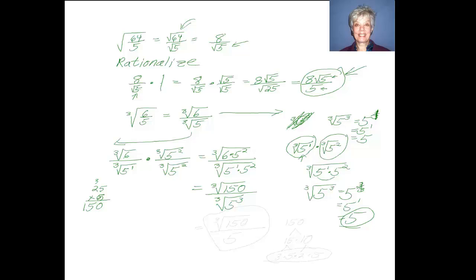Twice we've figured out what that is — the cube root of 5 to the 3 power is 5. So our final answer is the cube root of 150 over 5. Don't go dividing this 5 into the 150 — you can't do it. And to make absolutely sure that 150 doesn't have a cube root, just break it down: 150 equals 15 times 10, which is 3 times 5 times 2 times 5. There are not 3 of the same number in there, so no simplification needed. This is my final answer.